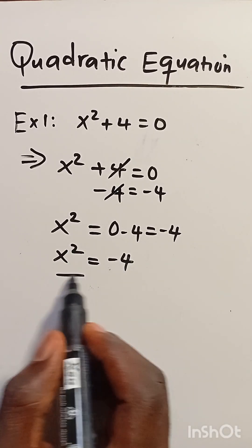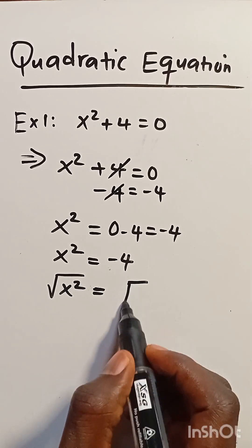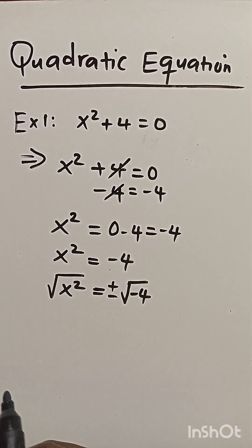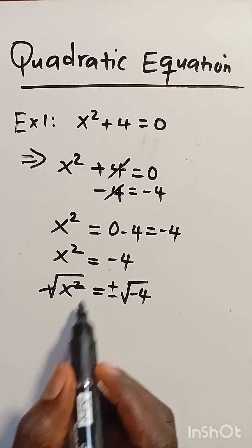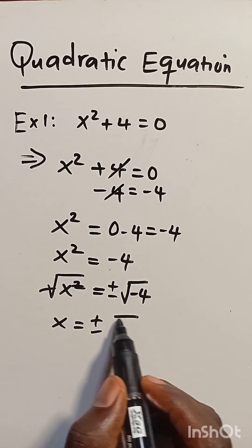Let's take the square root of both sides. Square root of x squared equals root of minus 4. We have to put positive or negative here. This cancels out, so x equals plus or minus root of...